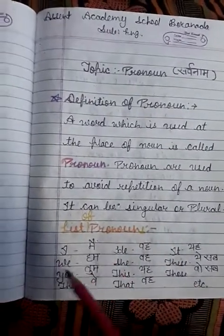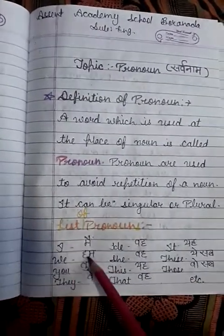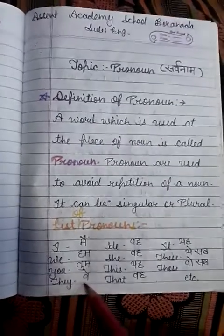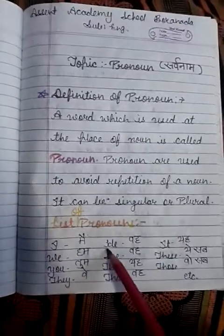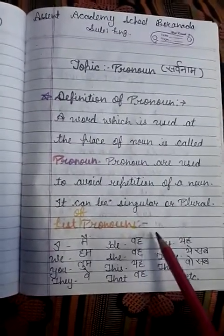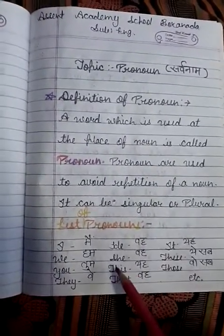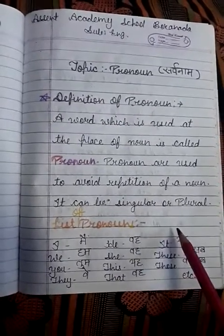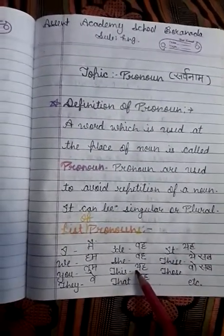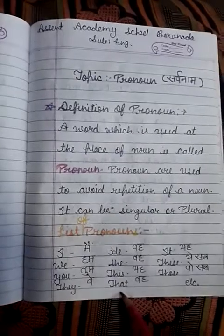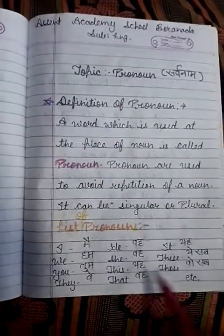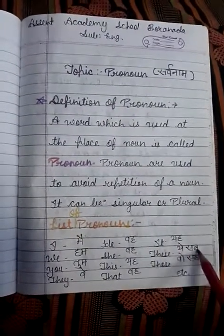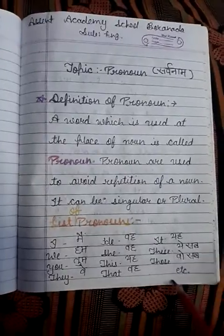I - मैं, We - हम, You - तुम, They - वे, He - वह (यह boys के लिए यूज होता है), She - वह (यह girls के लिए यूज होता है), This - यह, That - वह, It - यह, These - ये सब, Those - वो सब.